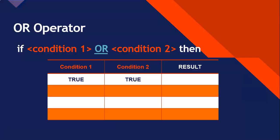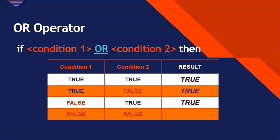Let's do the truth table for OR. If both conditions are true, then at least one of them is definitely true, so it will be true. If condition one is true and condition two is false, one of them is true — so that's enough, it'll be true. And if condition two is true but condition one is false, it doesn't matter — there's at least one true, so the whole thing will be true. But if both are false, there's no true there, so it will send back false.